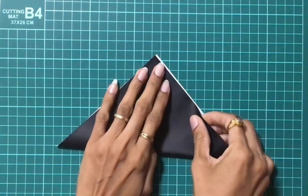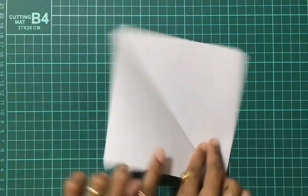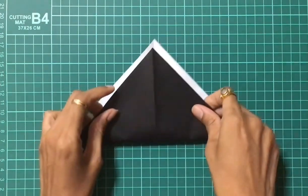I'll be starting with the diagonal fold. Create a cross crease by making one more diagonal fold.